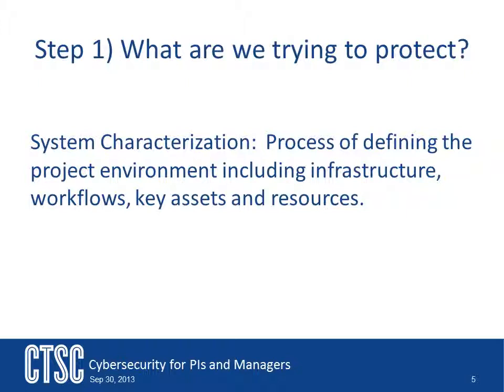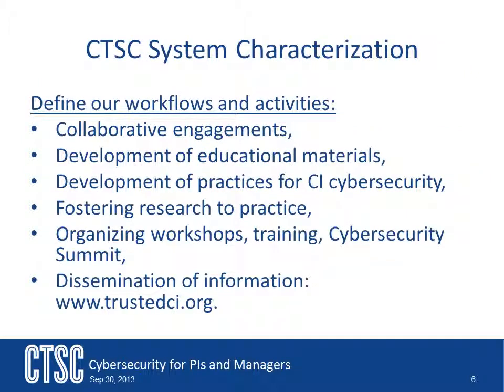A good way to approach this step is by asking yourself the question: what am I trying to protect? The answers to this question begin to identify the parts of the system you need to worry about and start to gain a better understanding so that you can clearly identify the associated vulnerabilities and threats. The first thing we did when approaching our system characterization was to define our workflows and activities. Looking at these allowed us to understand what was going on in our system. These items help clarify how the system is used and how we and our users interact with the system. Looking at workflows also helps with identifying what is important to the system — what data or interfaces people are using — which then becomes one of the key things we would want to protect.